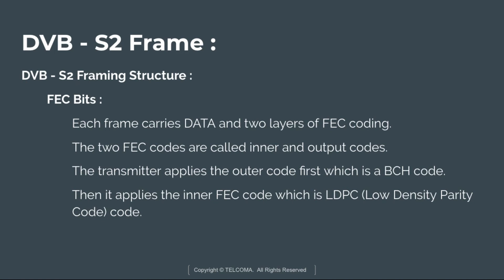Each frame carries data and two layers of FEC coding. DVB-S2 uses systematic codes, meaning the original data bits are always transmitted and the FEC bits are additional bits used to correct data bits that may have been altered during transmission. The two FEC codes are called inner and outer codes. The transmitter applies the outer code first, which is the BCH code, then applies the inner FEC code, which is LDPC — low-density parity check code. This concludes the DVB-S2 framing structure.